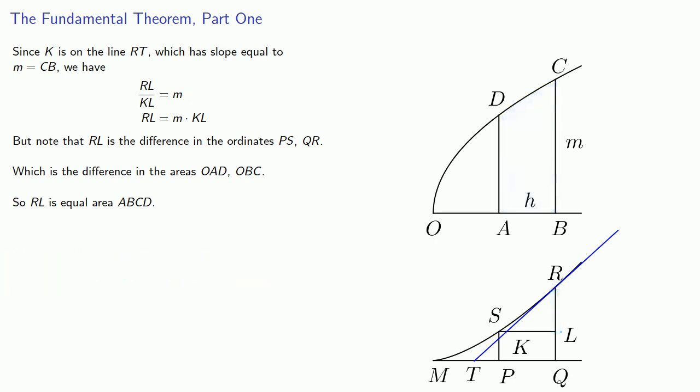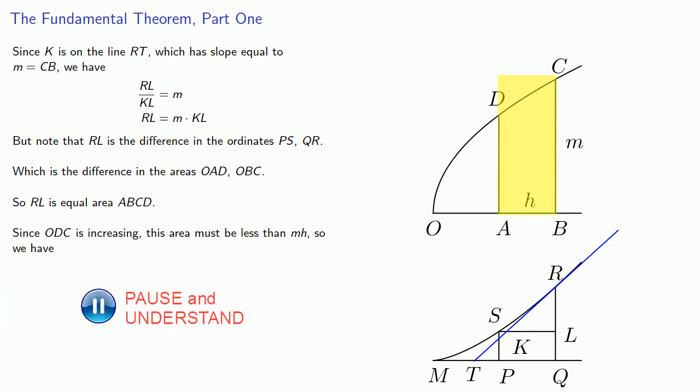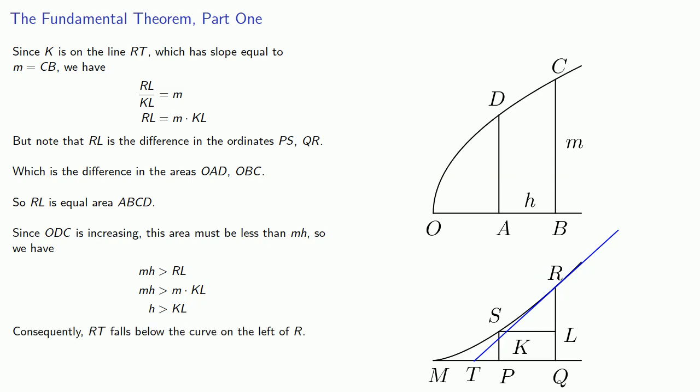Since ODC is increasing, this area must be less than MH, the rectangle with width H and height M. So we have MH must be greater than M times KL, which says that H has to be greater than KL. Consequently this point K has to fall somewhere between L directly below the point R and S another point on the curve.